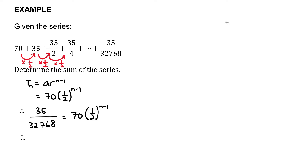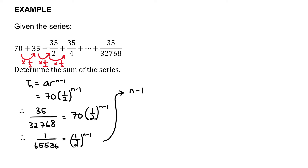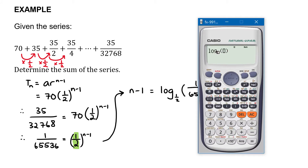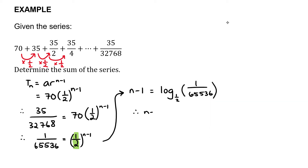Bringing the 70 over gives 1/65536 = (1/2)^(n−1). To solve for n we use a logarithm: n−1 = log base (1/2) of (1/65536). Plugging that into the calculator gives 16, so n − 1 = 16, therefore n = 17. This series asks us to sum 17 terms.